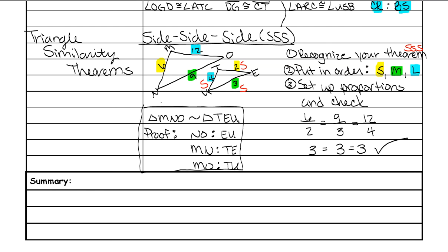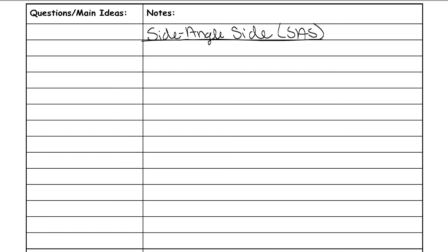Now we're going to go over side-angle-side similarity. Side-angle-side similarity is a lot like the congruent version, but the sides have to be proportional, not congruent. The angle does have to be congruent, just like in congruent triangles — the sides are proportional for similarity, not congruent. Here's an example.